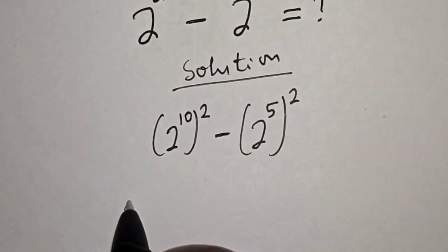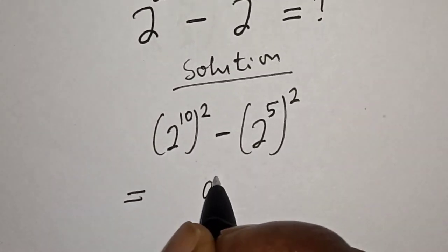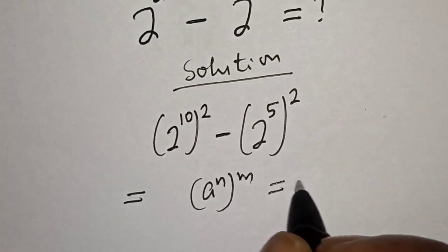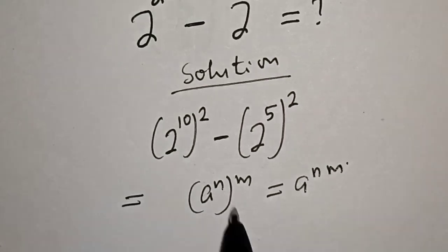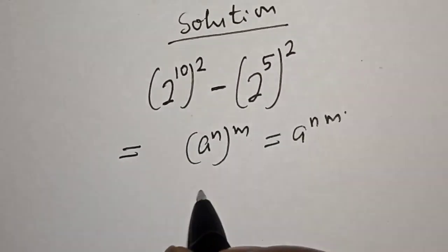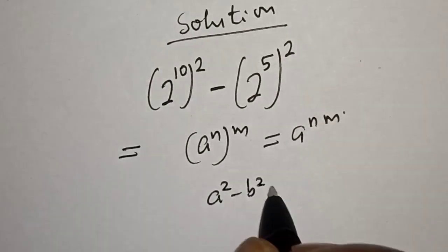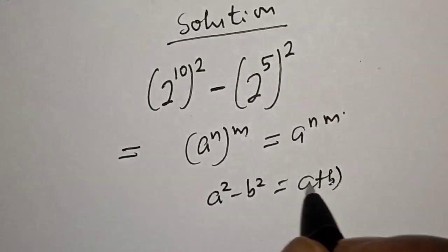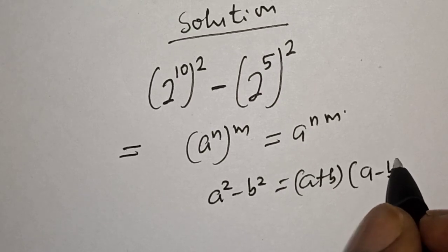Then this is equal to — remember this rule: a raised to power n, to the power of m, is equal to a raised to power n×m. Also note that this is difference of two squares: a squared minus b squared is equal to (a plus b) multiplied by (a minus b).